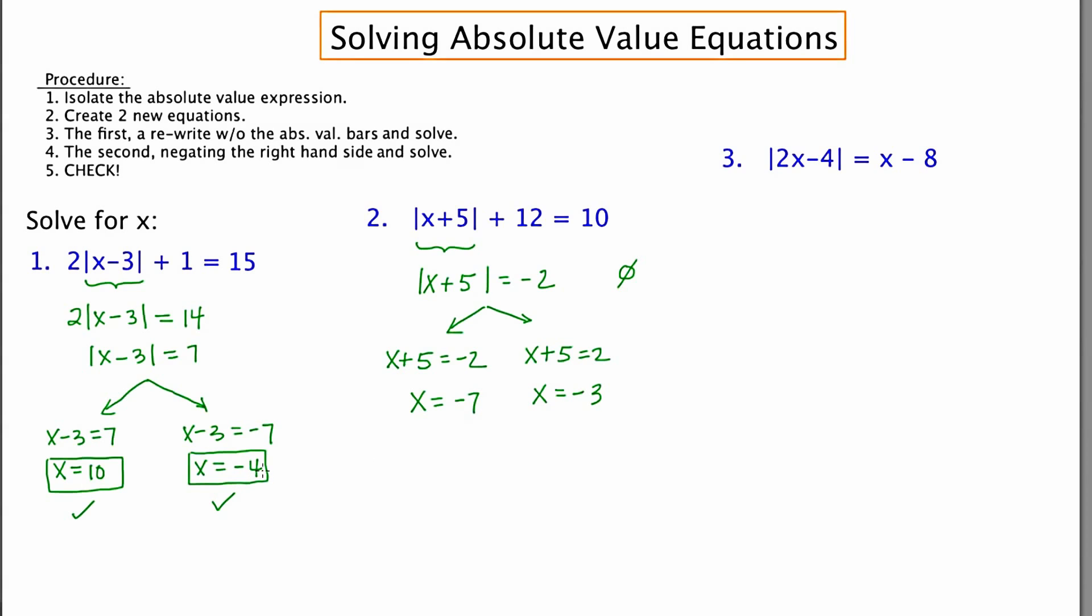Now the fact that these answers are negative isn't that big of a deal. We had -4 over here in problem one. It's when we check I think we're gonna have a problem. Let's start by checking -7. -7 + 5 is -2. The absolute value of -2 is 2, and 2 + 12 is 14, not 10. So this one does not work.